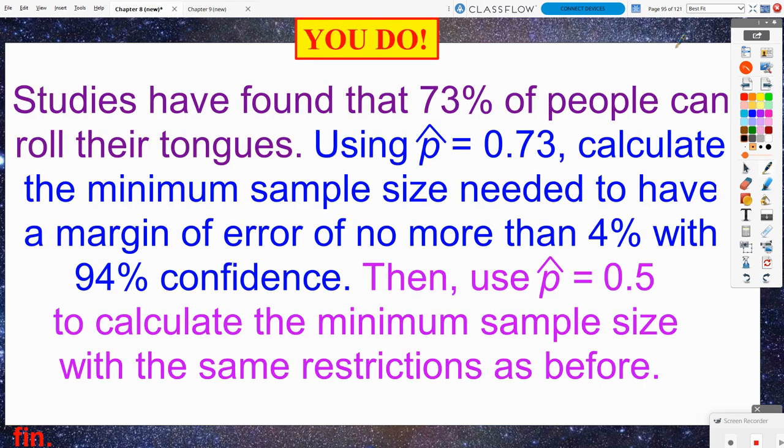So what I want you to do is to try this problem. You're going to solve this algebraically twice. Studies have found that 73% of people can roll their tongues using a p hat value of 0.73. I want you to calculate the minimum sample size needed to have a margin of error of no more than 4% with 94% confidence. Then redo your calculation, but use that maximum value of 0.5 for p hat and then calculate what would be the minimum sample size you would need to still have a margin of error of no more than 4% with 94% confidence. And we will go over these together in class tomorrow. I'll see you tomorrow.